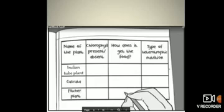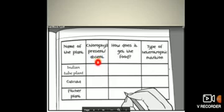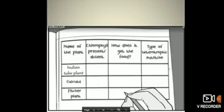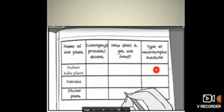Now you have a chart to complete. We have already covered the Indian tube plant, Kuskuta plant, and pitcher plant. For chlorophyll present or absent: Indian tube plant — chlorophyll is absent; Kuskuta — chlorophyll is also absent; pitcher plant — chlorophyll is present but it still needs nitrogen to make proteins. Type of heterotrophic nutrition: Indian tube plant — saprophytic; Kuskuta — parasitic; pitcher plant — insectivorous.